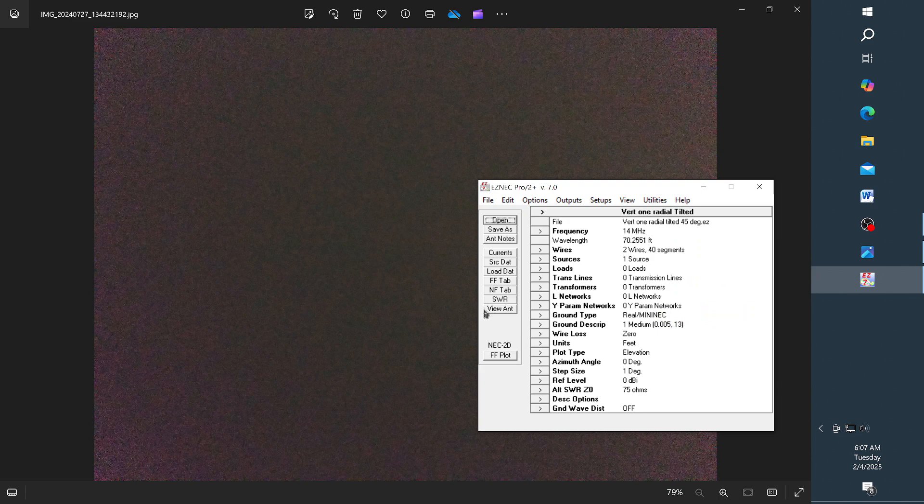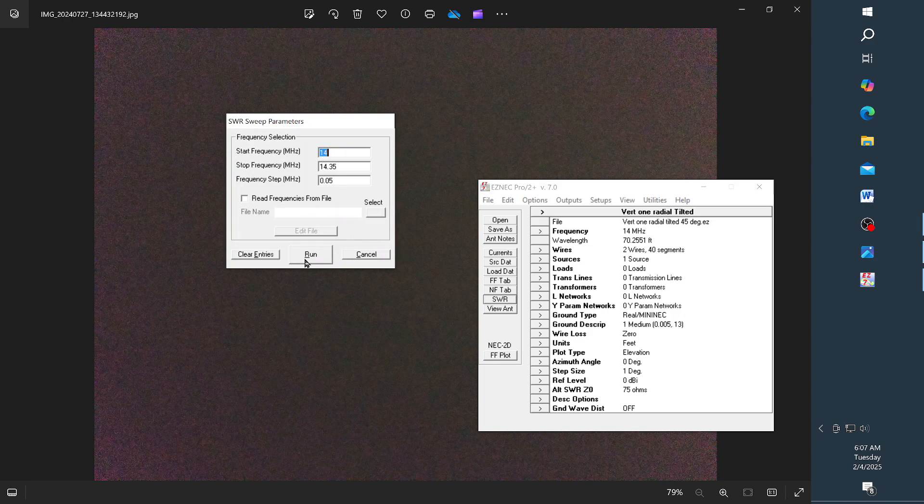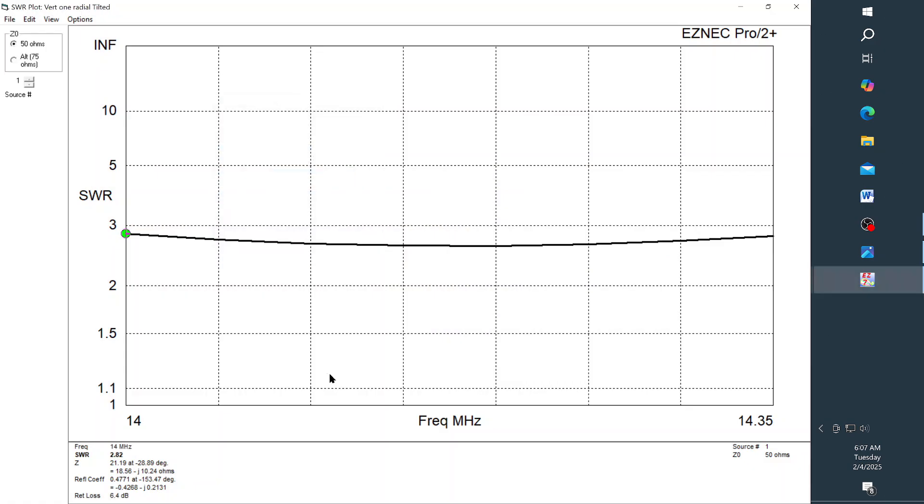Next, let's look at the SWR, which is the whole way across the 20 meter band. You can see we're less than 3 to 1 the whole way across. So that puts you in the range of the typical 100-watt transceiver with the built-in tuner. Most of them are capable of tuning a 3 to 1.